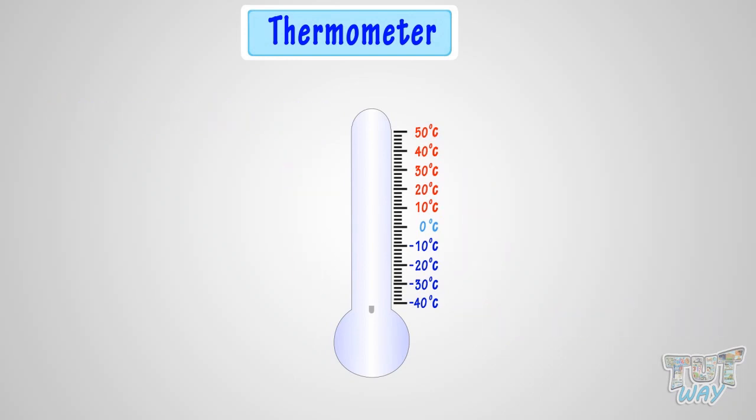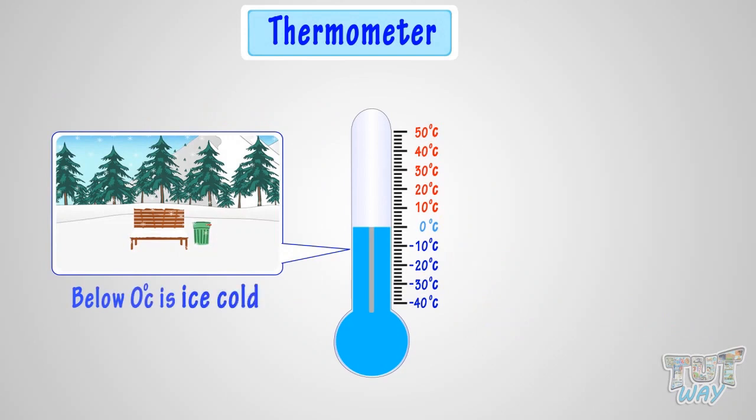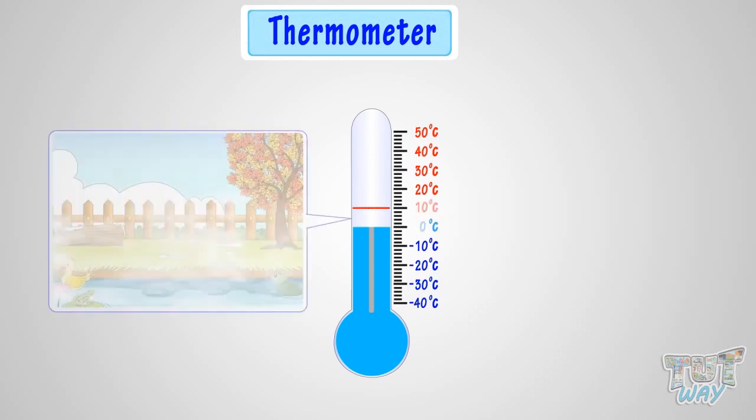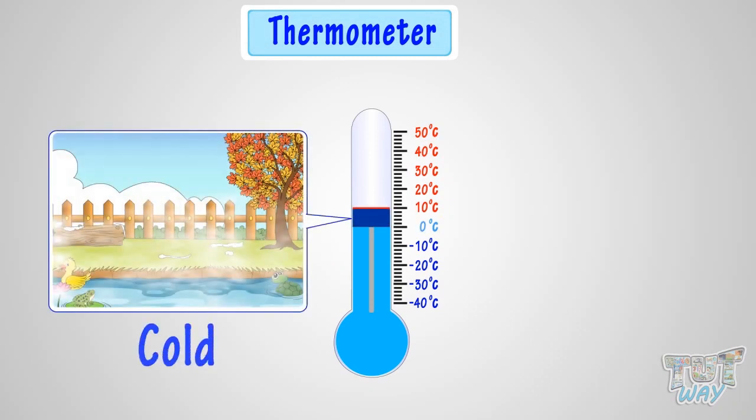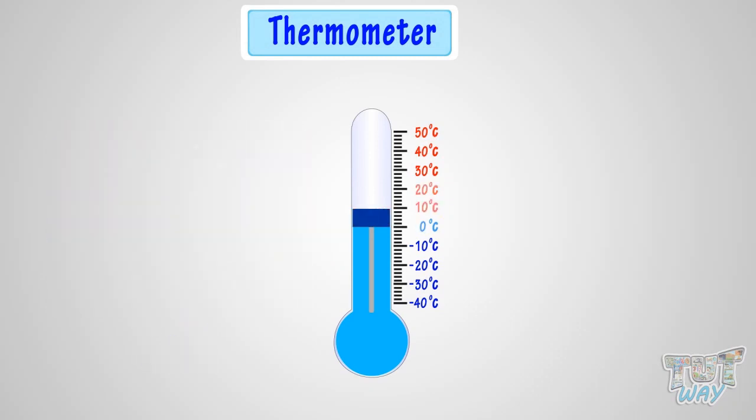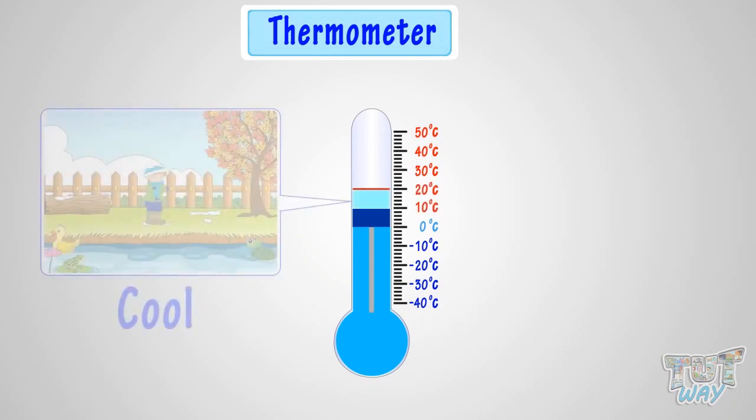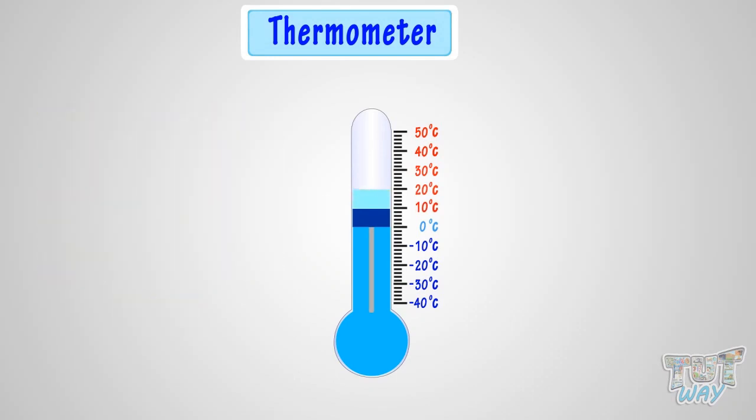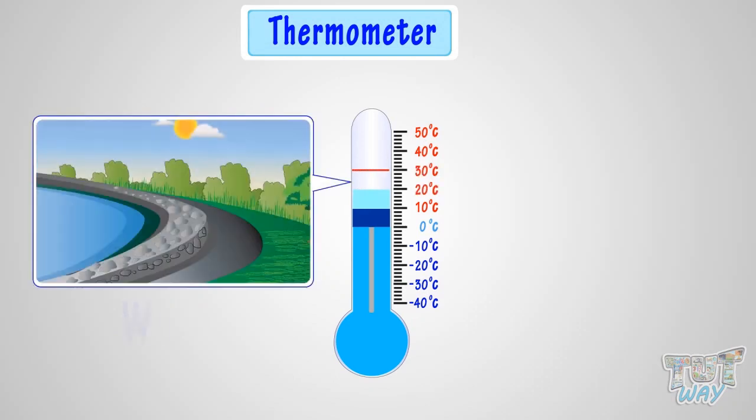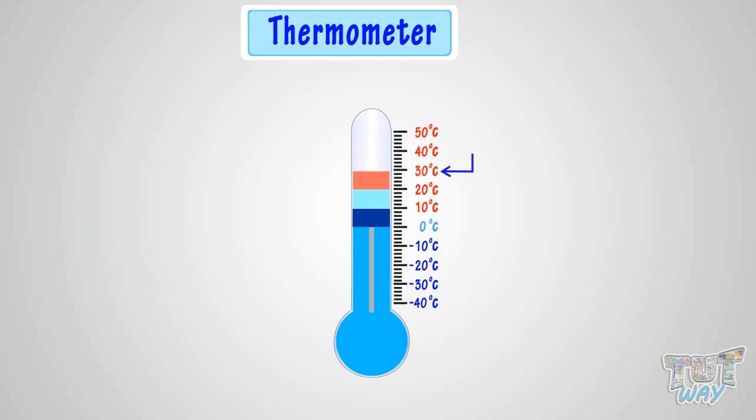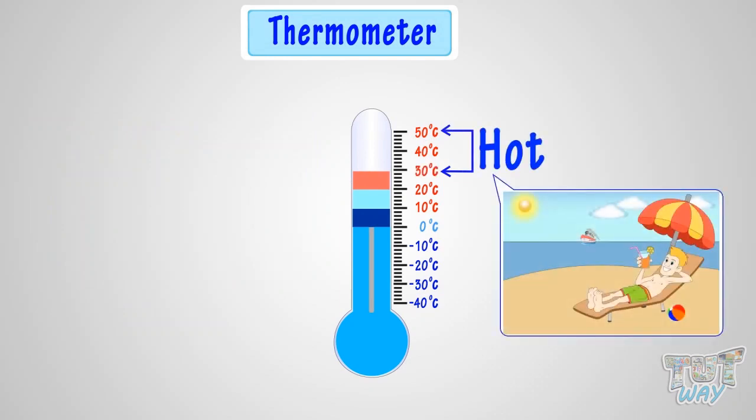Below zero degrees Celsius or temperature in minus is very very cold or ice cold. Zero to ten degrees Celsius is cold. Ten to twenty degrees Celsius is cool. Twenty to thirty degrees Celsius is warm. And thirty degrees Celsius and up is hot.